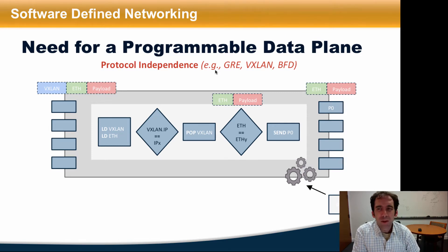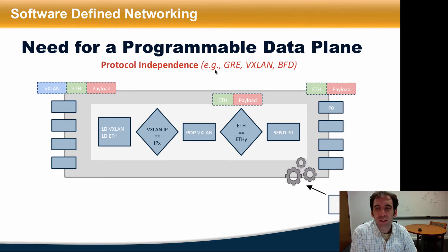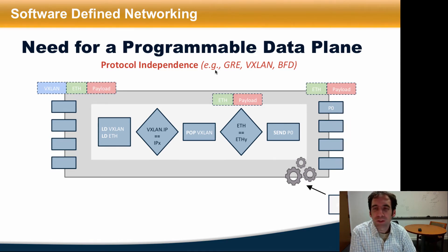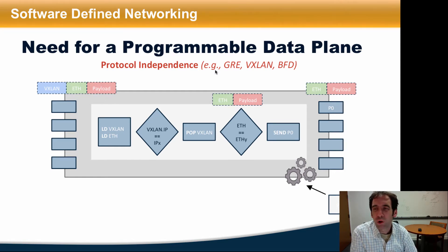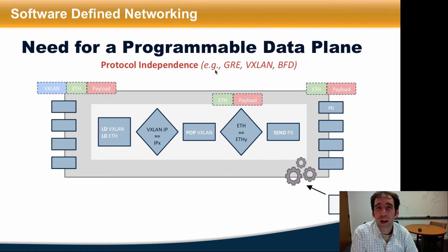Recently, many new protocols are being developed for serving different applications in data center and enterprise networks, including GRE, VXLAN, and BFD. There's a need to rapidly deploy these protocols in the network without waiting for new OpenFlow specification and chips to spin up, which may take months, if not years, before they're actually deployed in practice.